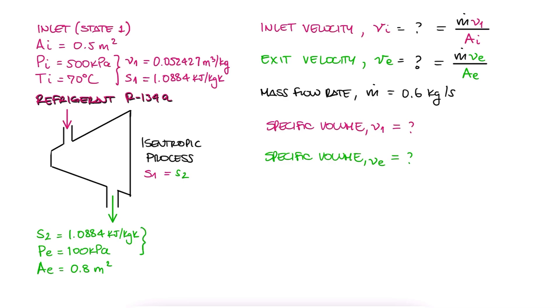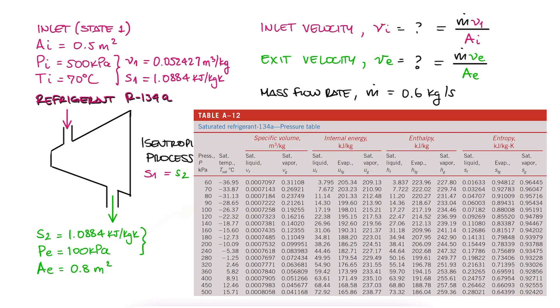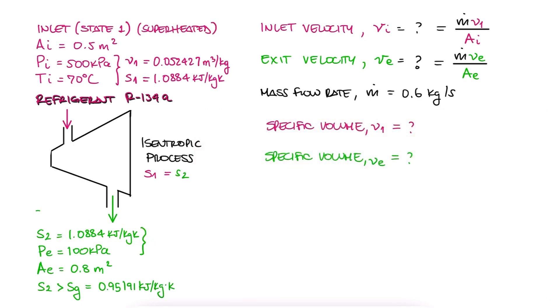we check with the saturated tables by pressure to see if at 100 kPa we are in the saturated mixture region. And since s2 equal to s1 is higher than sg, the specific entropy for a saturated vapor, we now know that at the exit, the refrigerant is still superheated.